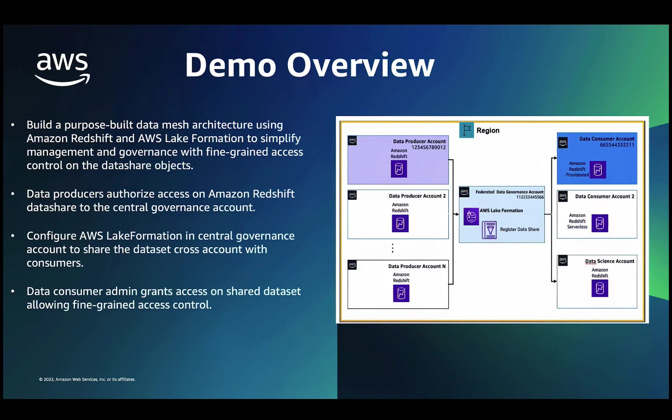As you can see in this diagram, on the right-hand side, first data producers will authorize access on the Amazon Redshift DataShares to the central governance account. Next, in the central governance account, we'll configure AWS Lake Formation to share the dataset cross-account with consumers. And then the consumer admin grants access to the consumer users on the shared dataset, allowing fine-grained access control at the database, table, and column level.